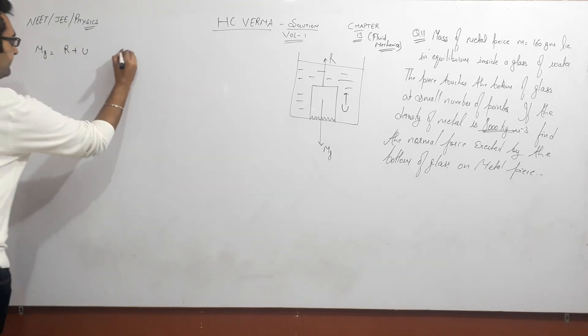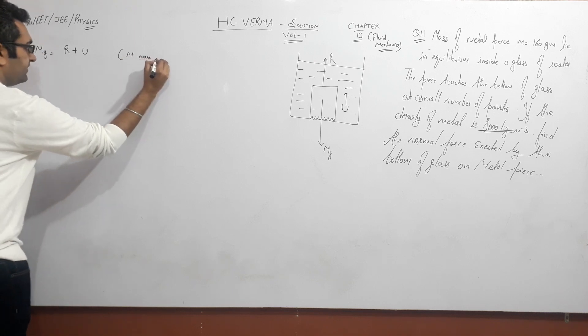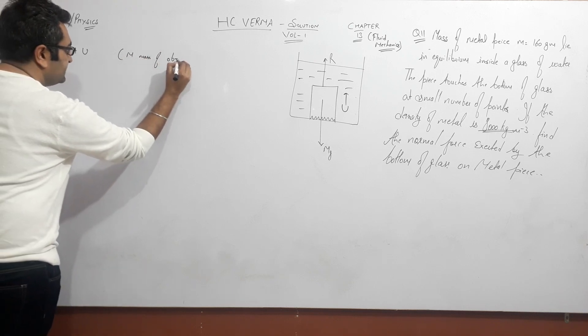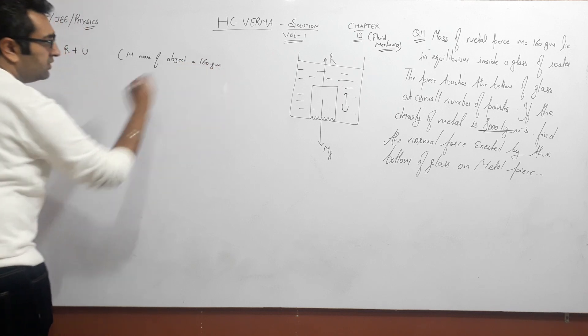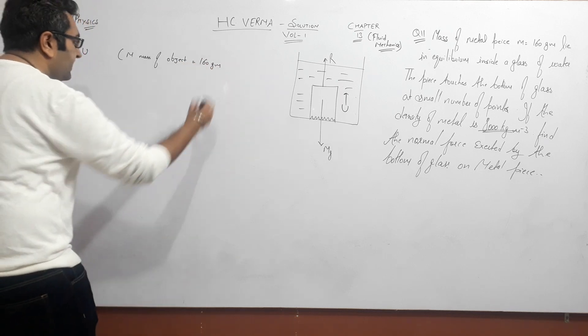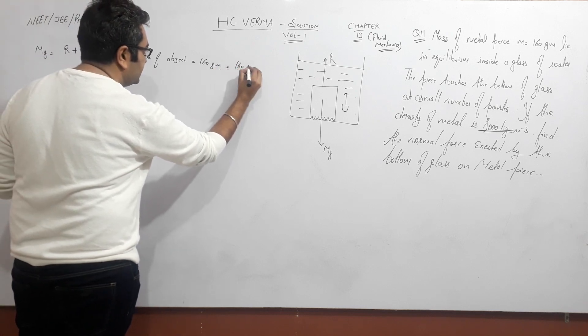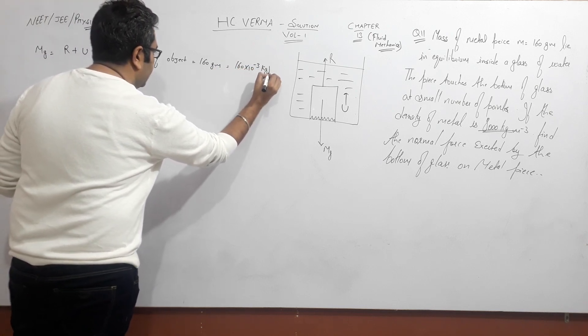What is M? M is the mass of the object. How much is given? 160 grams. So 160 grams. If I want to convert to kg, 160 times 10 to the power minus 3 kg.